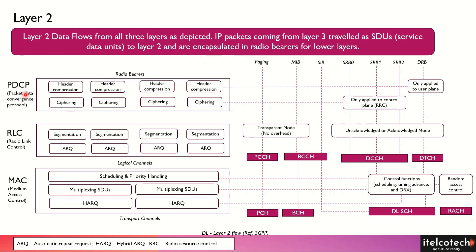There are three important protocols covered in Layer 2: one is the Packet Data Convergence Protocol (PDCP), another is the Radio Link Control (RLC), and the third is the MAC layer, which is the Medium Access Control.